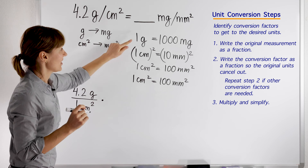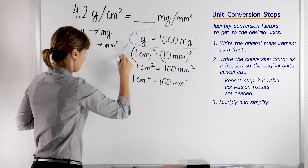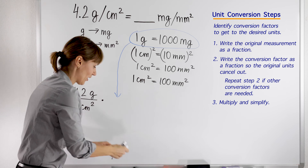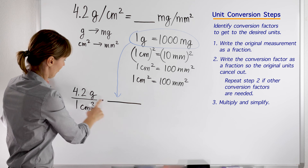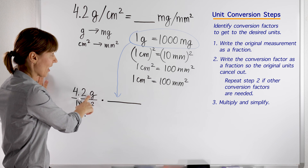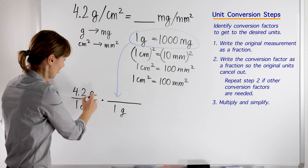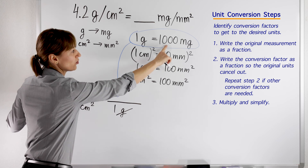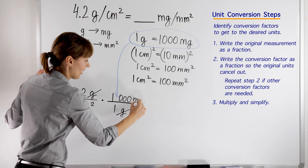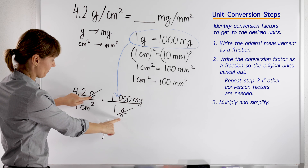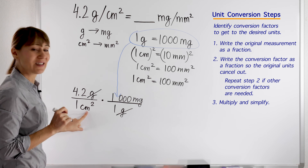What conversion factor will help us? We need to plug in this conversion factor in such a way that our original units cancel out. First, we are trying to get rid of grams. We have grams in the numerator on top, so I will put 1 gram here on the bottom in the denominator so my original units cancel out. And I will put 1,000 milligrams in the numerator. My original units canceled out, and what I'm left with is 1,000 milligrams per centimeter squared.